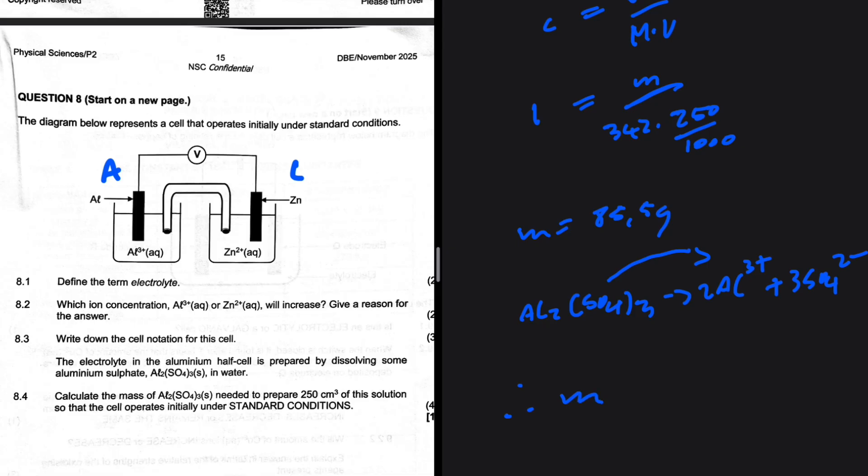So therefore, the mass which we are actually looking for will be our answer divided by 2, which is 42.75 grams. Did you realize that? Did you realize that? Or you missed the point. Let me know in the comments. Here we go.